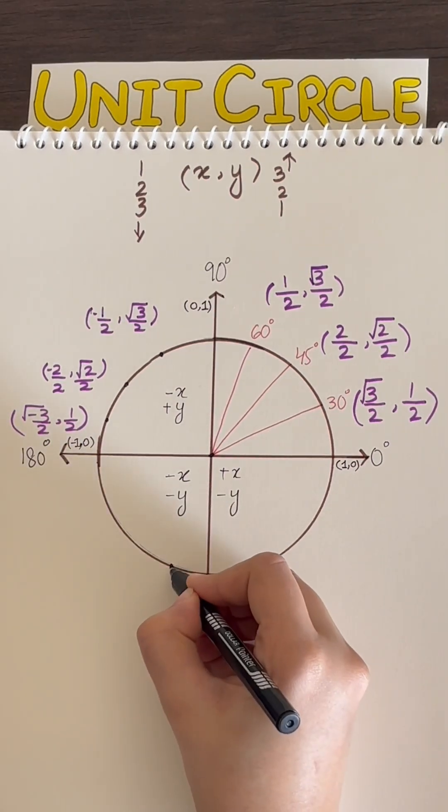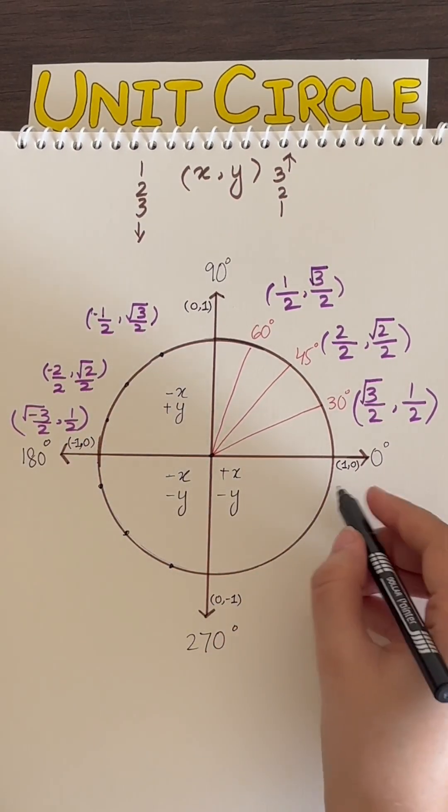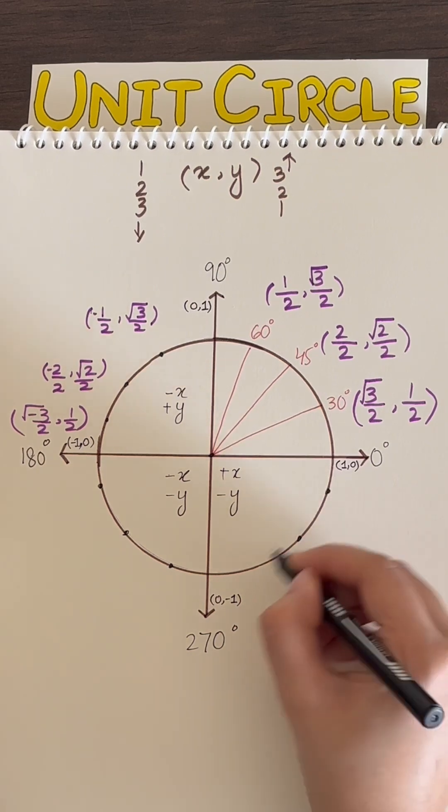For the bottom part of the circle, let's split 180 to 270 in half and thirds, and again with 270 to 360.